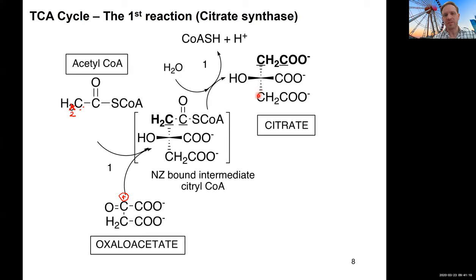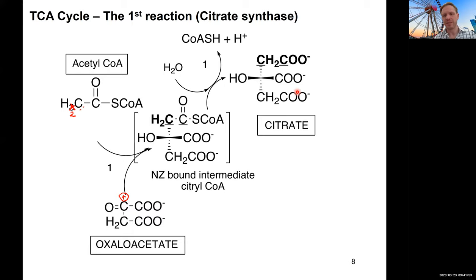What we have achieved is condensing these two molecules and removing the CoA cofactor, which is released and can be reused in the PDH reaction. What we generated is a carboxylic acid — specifically one with three carboxy functions, each carbon carrying a carboxy group. So it's a tricarboxy acid. That's why the cycle is called TCA, or tricarboxylic acid cycle. Citrate is the first key intermediate.